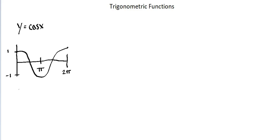I can evaluate input values. For example, function of π is cosine of π, which is negative 1. We can see that on our graph, where the x value is π, the y value is negative 1.